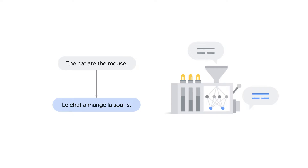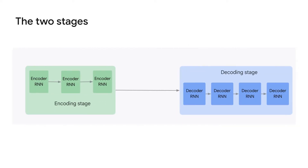Now we know what an encoder-decoder architecture does, but how does it do it? Typically, the encoder-decoder architecture has two stages. First, an encoder stage that produces a vector representation of the input sentence. Then this encoder stage is followed by a decoder stage that creates the sequence output. Both the encoder and the decoder can be implemented with different internal architectures. The internal mechanism can be a recurrent neural network, as shown in this slide, or a more complex transformer block,